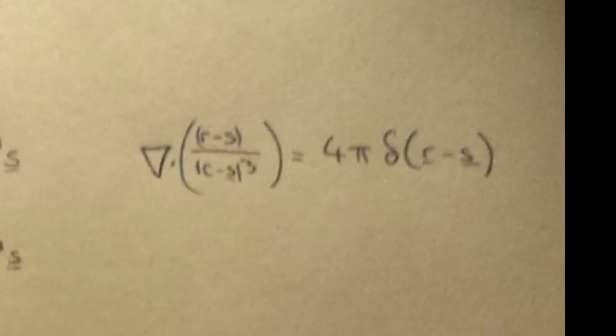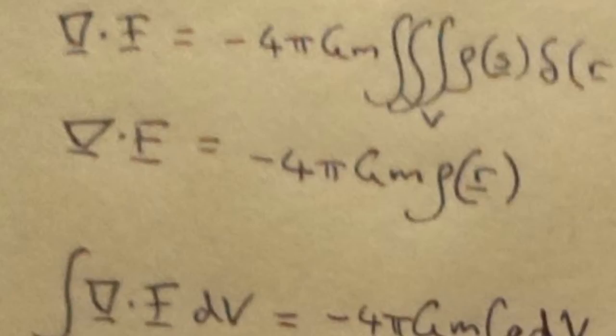So substituting that in, we're left with this fourth equation, the divergence of F equals minus 4 pi Gm integral of the density function times the Dirac delta function of r minus s, integrated across this dummy space variable. And because of the Dirac delta function, it means that we can now evaluate this integral, which leaves us with the divergence of F equals minus 4 pi Gm density.